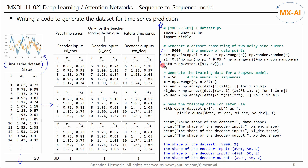First, we generate a dataset consisting of two noisy sine curves. The number of data points is 5,000. Next, we generate the training dataset for a sequence-to-sequence model: the data for encoder input, the data for decoder input, and the data for decoder output.